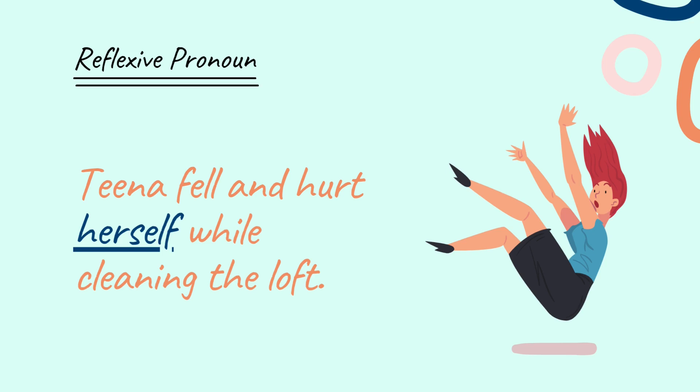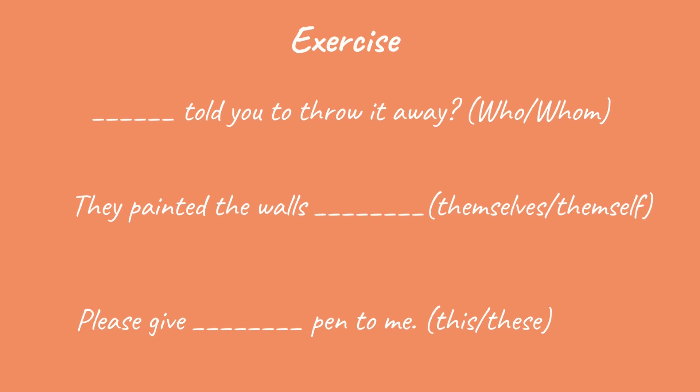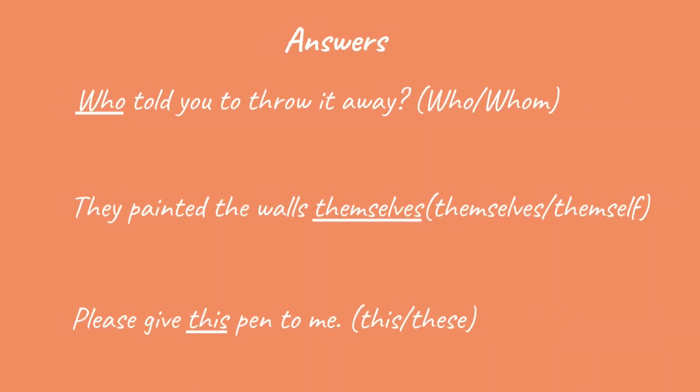With this, we have learned all seven pronouns. Now let me give you an exercise to practice. Fill in the blank with the correct word from the bracket. One: Dash told you to throw it away. Two: They painted the walls dash. Three: Please give me dash pen. Message the answers in the comments — I will share the answers in a while. You may pause the video. The answers are now on your screen. I hope you got the correct answers.